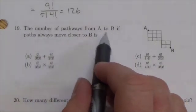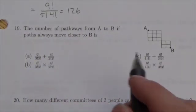So this question says that the number of pathways from A to B, if the paths always move closer to B, is.